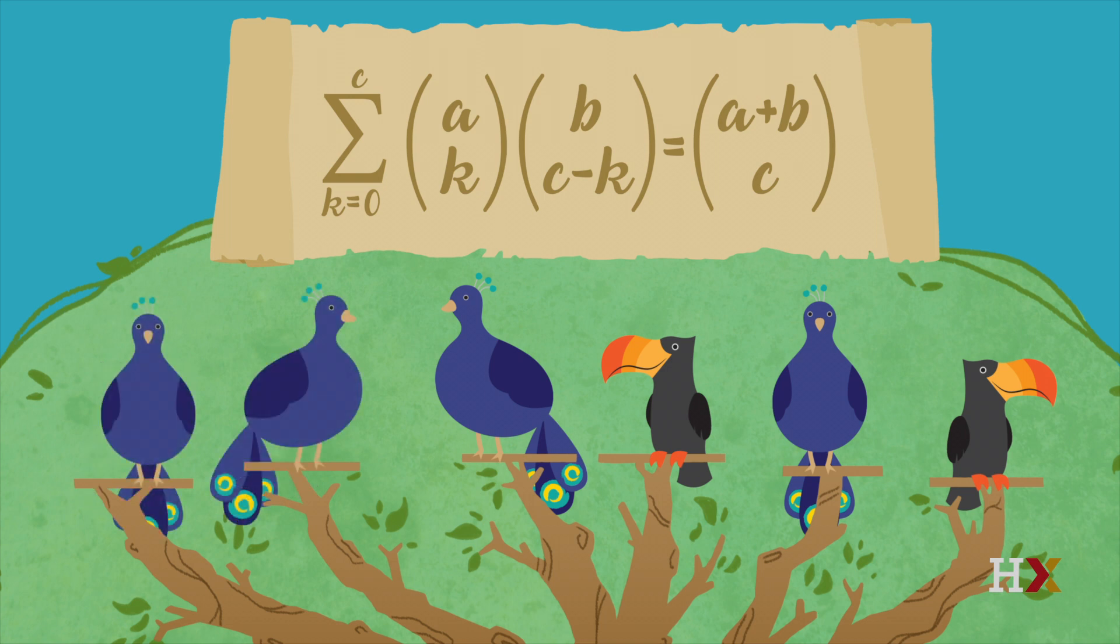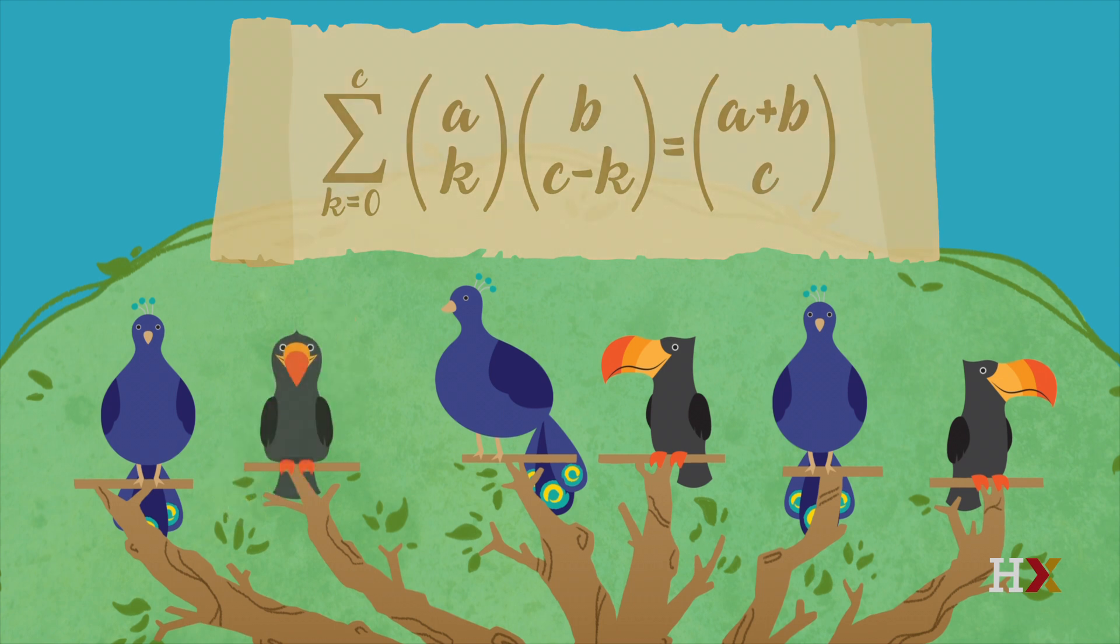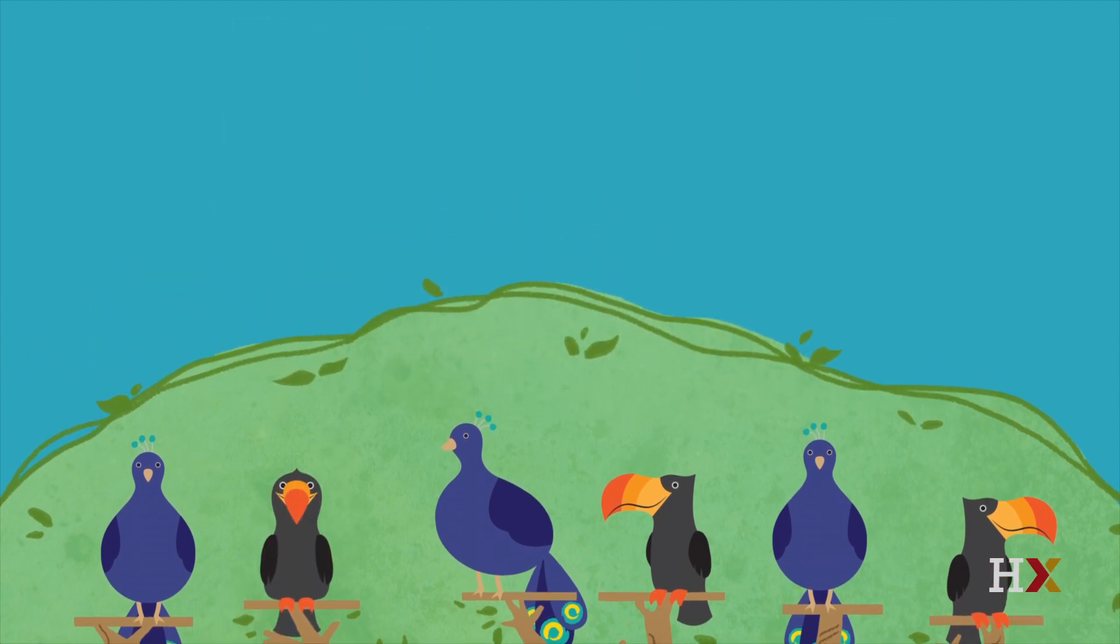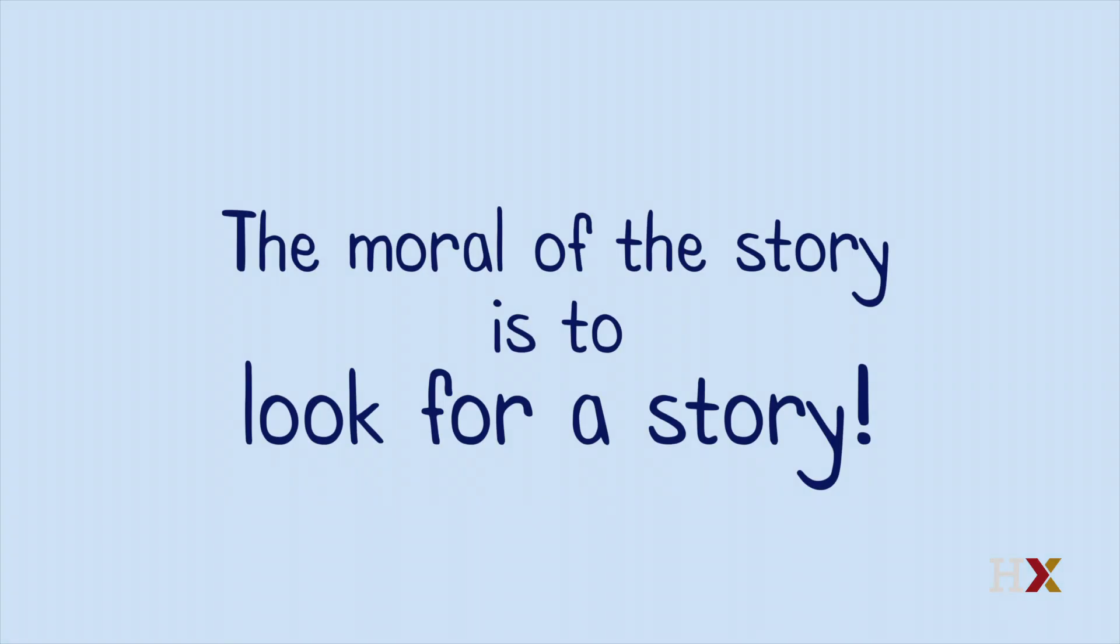Vandermonde's identity is a handy result that often comes up in problems involving binomial coefficients. Thinking about it in terms of a story makes it easier to remember and understand. The moral of the story is to look for a story.